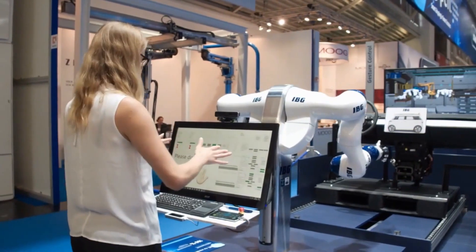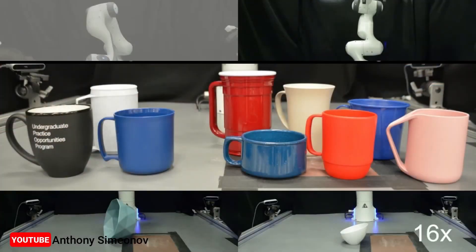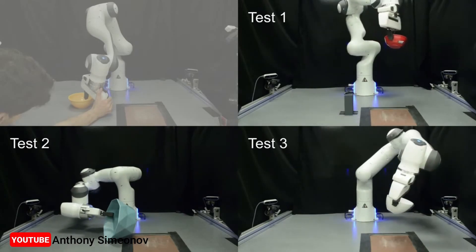In simulations and using a real robotic arm, the researchers show that their system can effectively manipulate never-before-seen mugs, bowls, and bottles arranged in random poses using only 10 demonstrations to teach the robot.